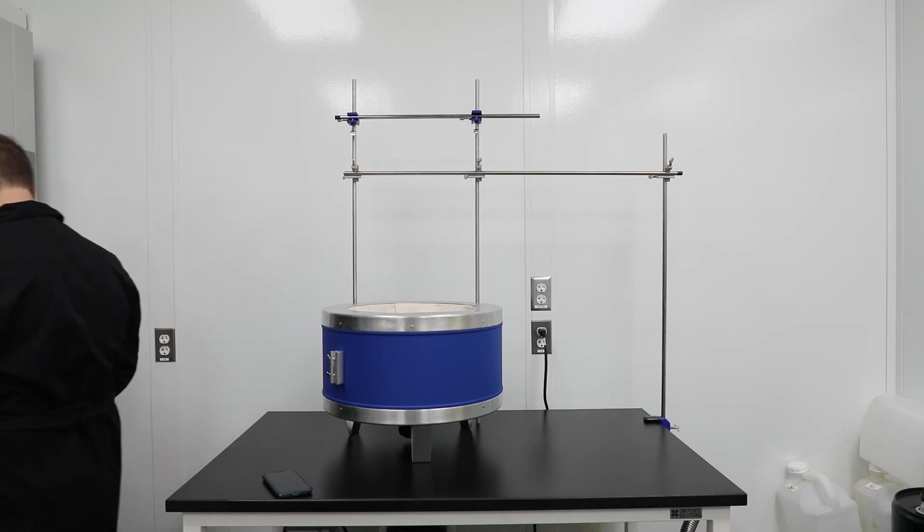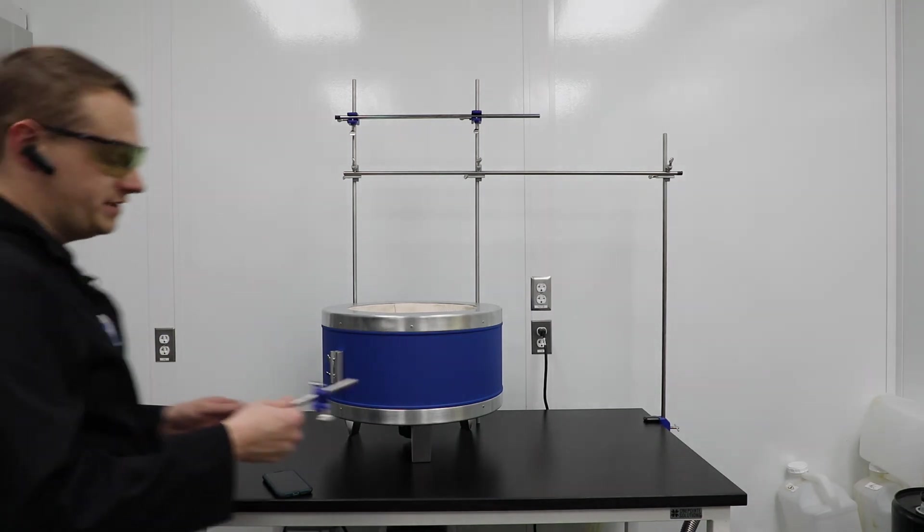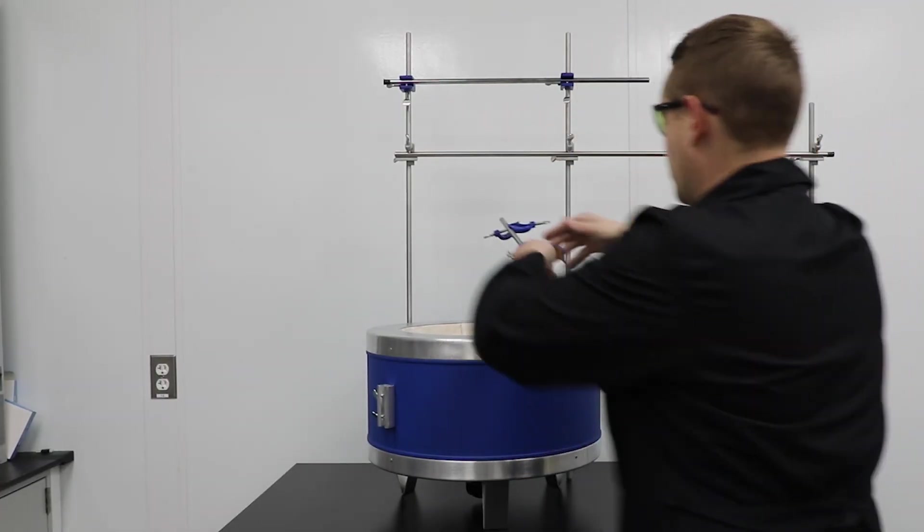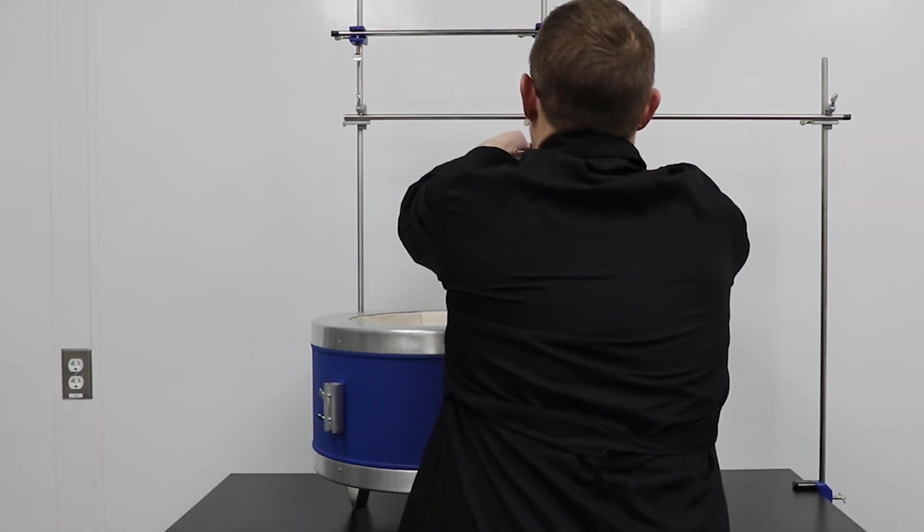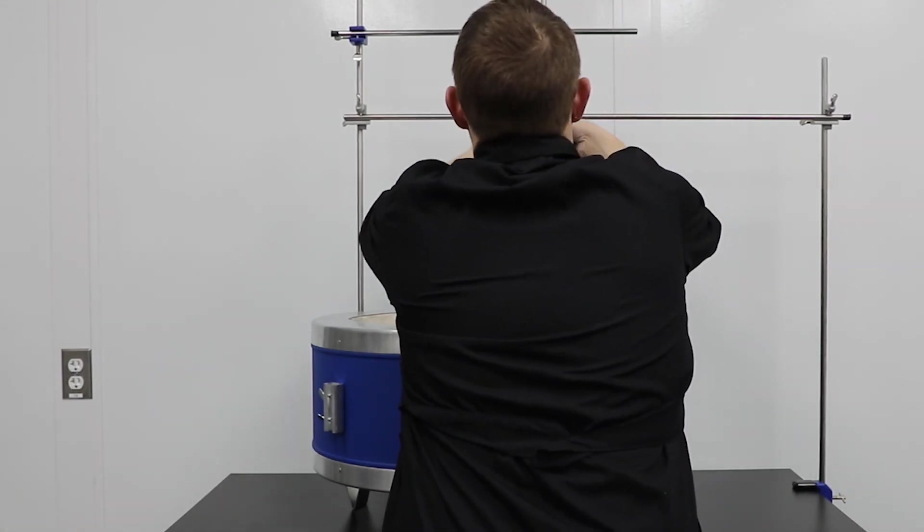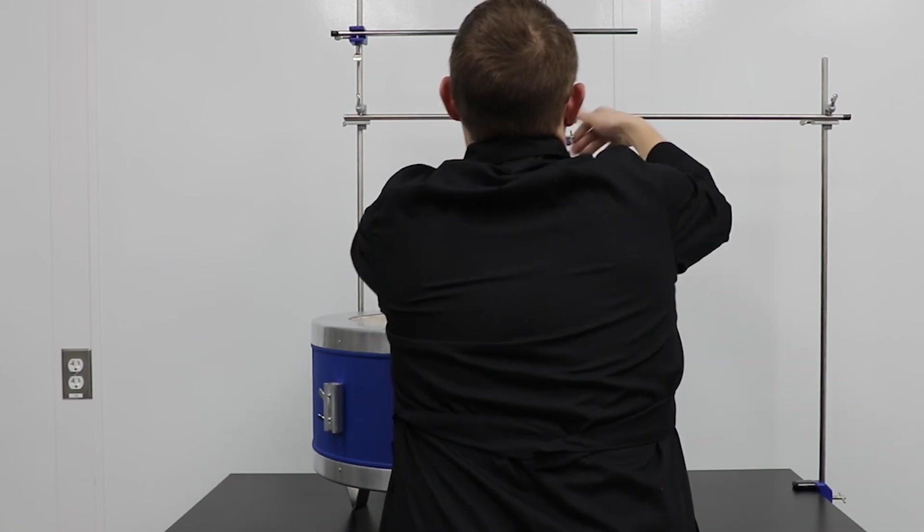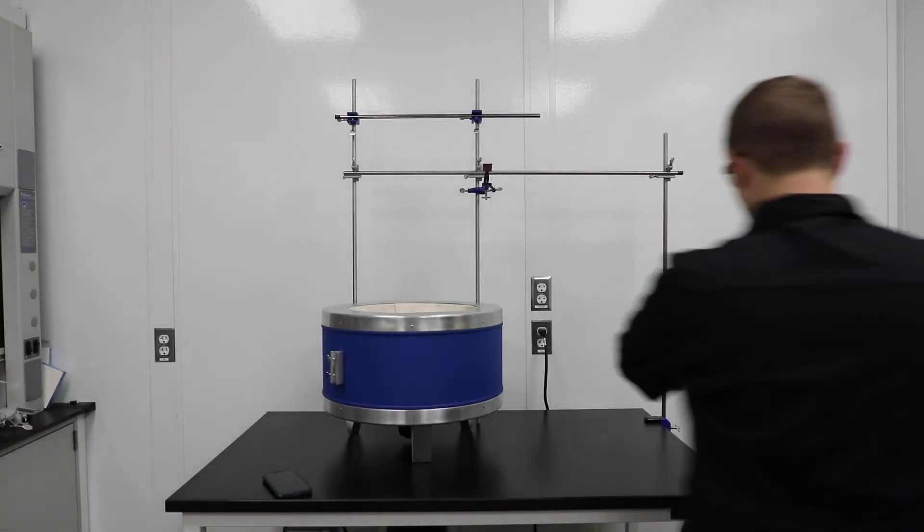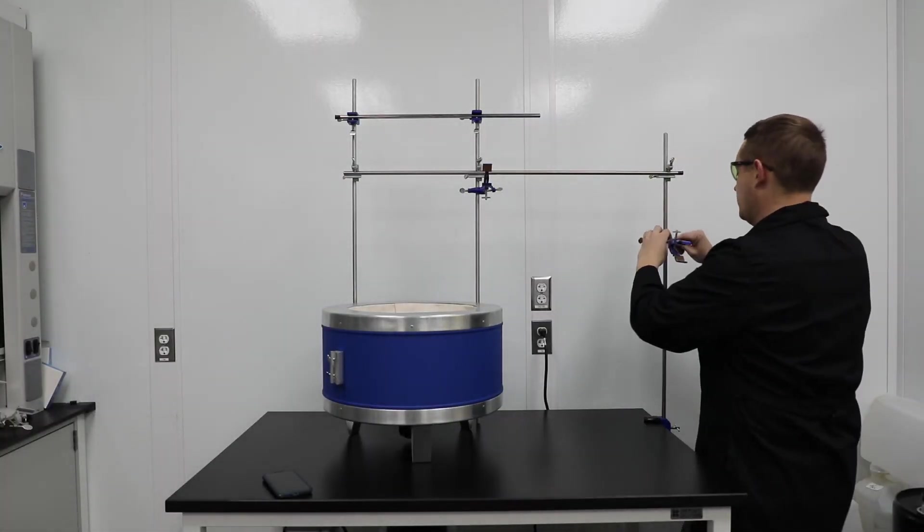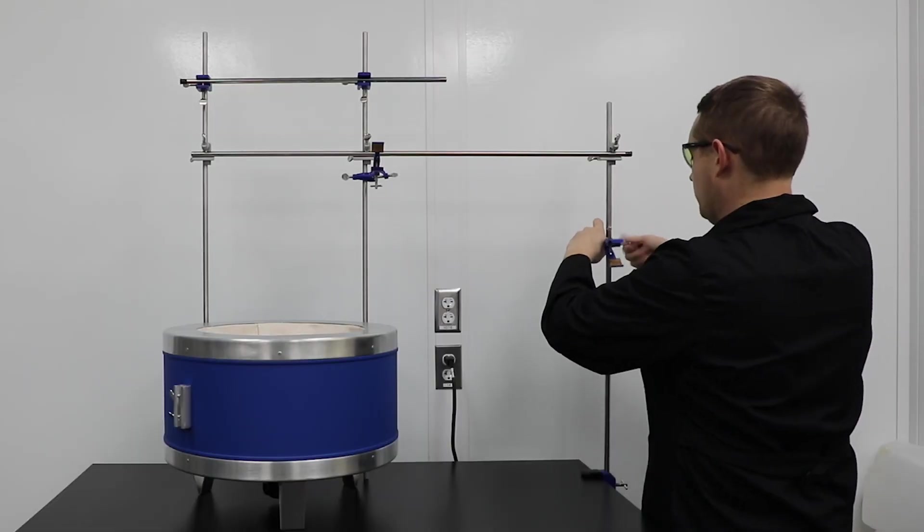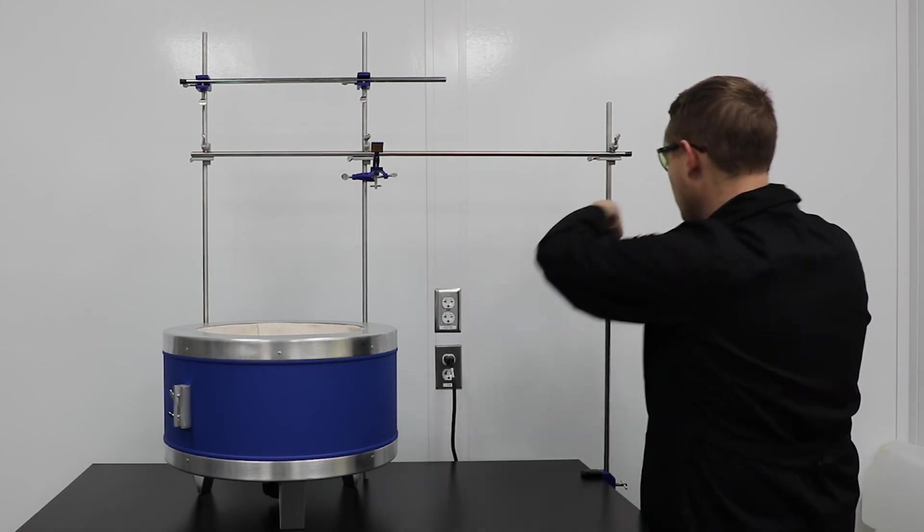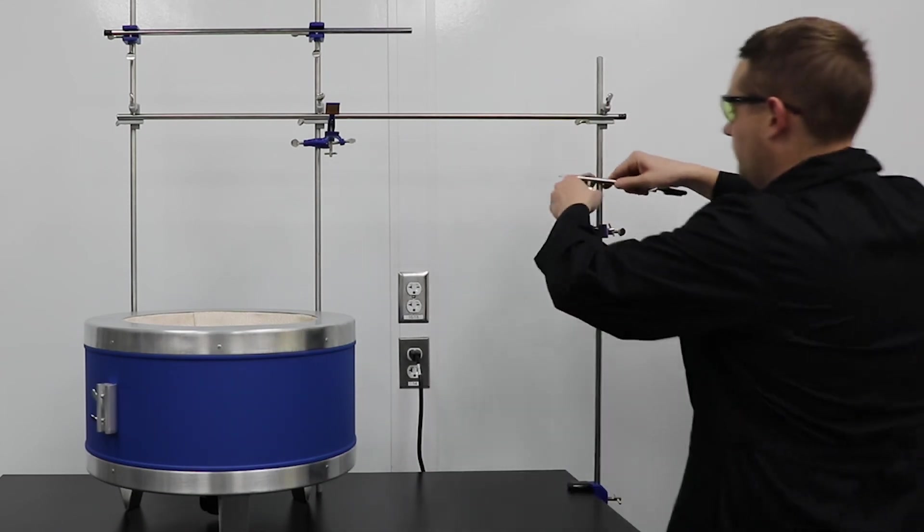A couple other things I would do is I can go ahead and set up the clamp for my condenser. I know that my condenser is going to sit approximately around the system here so on the vertical I'll go ahead and put in this clamp in preparation to hold on to my condenser and support it. Another one I can put on is for my secondary condenser slash secondary receiver distribution receiver over here. Again these are just estimations. We'll move these around when we actually set up the whole system.